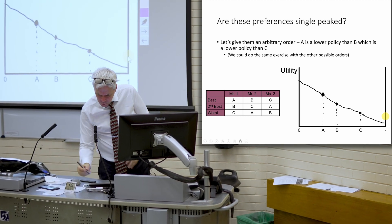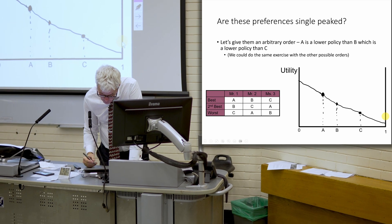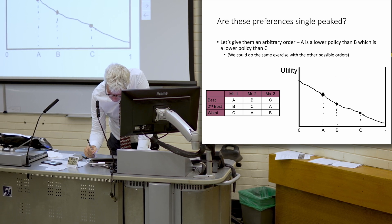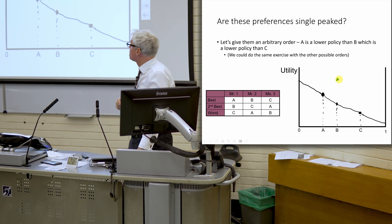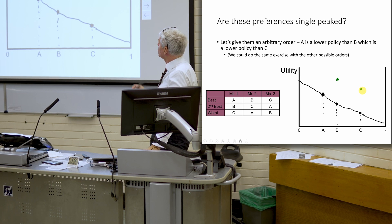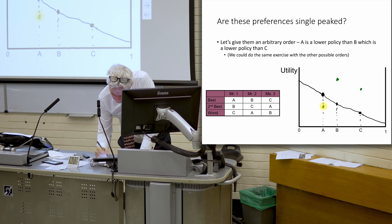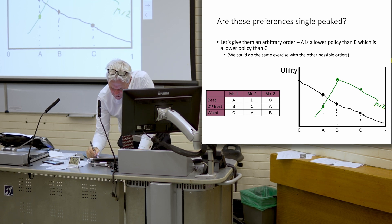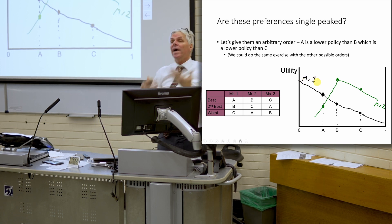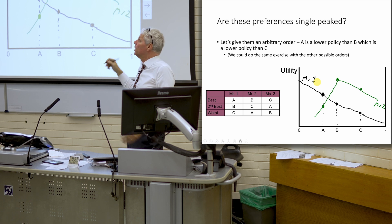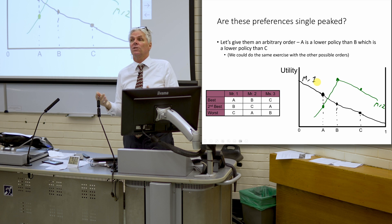Now Mr. 2: we're told that B is the best for him, so we give him a high utility at B. Then C is less good than B, so it's got to be lower. And A is the worst, so it has to be even lower than C. And we can represent this guy's utility function with a single peak at B — everything else moving in either direction gets worse. So for both Mr. 1 and Mr. 2, we can represent their utility functions with single-peaked preferences.